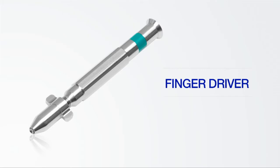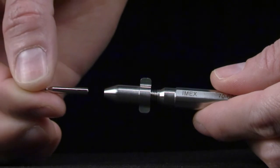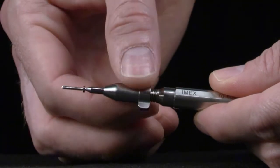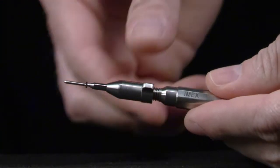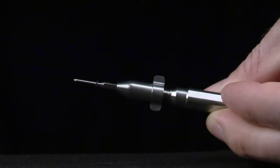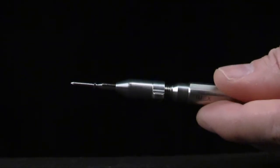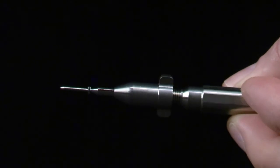Finger drivers are the VetKISS equivalent of screwdrivers. They are short and lightweight, providing precision control during screw insertion. Since VetKISS screws all have a uniform 3 millimeter diameter shaft, a single finger driver can be utilized across all screw diameter options.